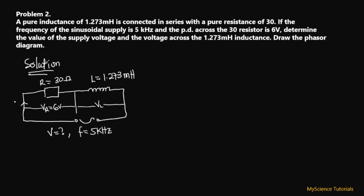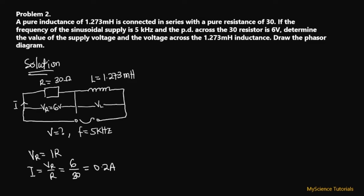In this AC series circuit, the same current flows through all components. Since we know the voltage across the resistance, we can find the current. Using VR = IR, we make current the subject: I = VR / R = 6 / 30 = 0.2 amperes as the current flowing through the entire circuit.